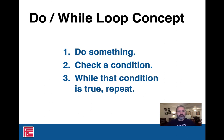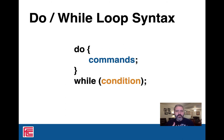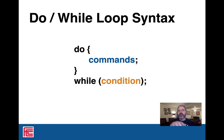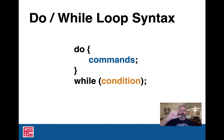Do while loop concept: do something immediately, and then after you're done, check the condition. Then repeat while that condition is true. Here's the syntax for the do while loop. You get 'do', then the block of commands you want to execute immediately, and then 'while'. I often put the while connected to the last curly brace. There are a couple different formatting styles — style guides for most big companies will tell you what they prefer for consistency. White space doesn't matter in C++, so you can format it either way.